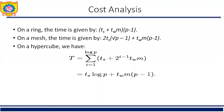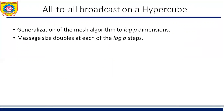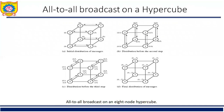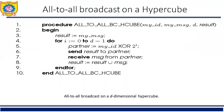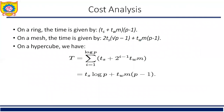All-to-all broadcast on hypercube is a generalization of the mesh algorithm to log P dimensions. Message size doubles at each of the log P steps. This is illustrated for an 8-node hypercube. All-to-all reduction follows similar communication patterns to all-to-all broadcast except in reverse order. On receiving a message, a node must combine it with the local copy of the message that has the same destination as the received message before forwarding the combined message to the next neighbor.